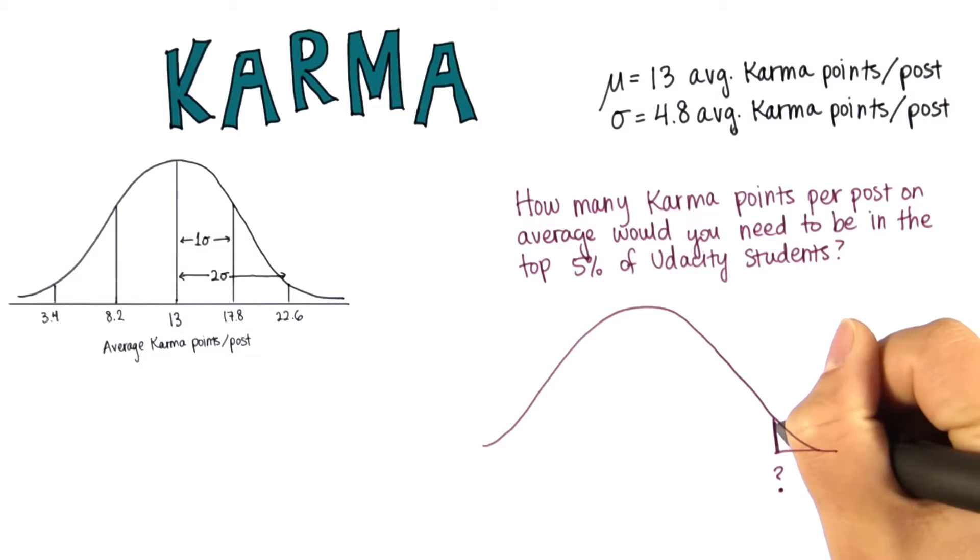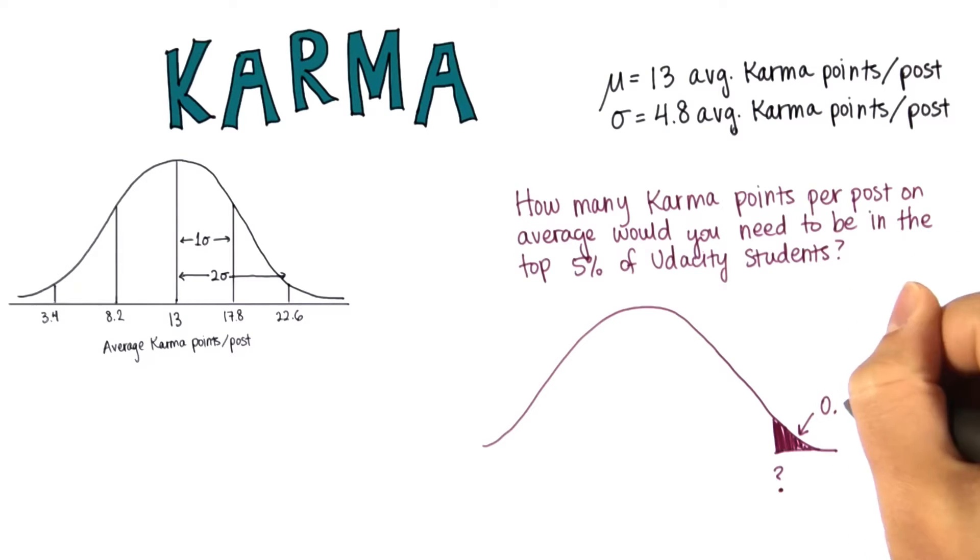So here's our distribution, and we want to find what value is here, such that the percent here is 5. That's the same as a proportion of 0.05.